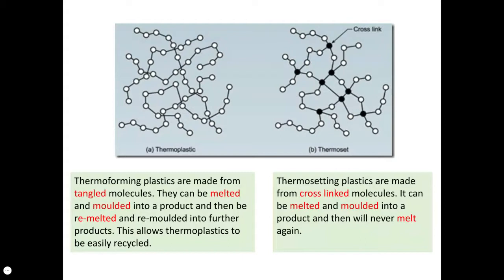Thermoplastics, often called thermoforming plastics, are in essence made from lots of long strands of polymers that are tangled together. These long strands of polymers are not connected to each other, and therefore the forces between them are very weak, requiring not very much energy to break them down.